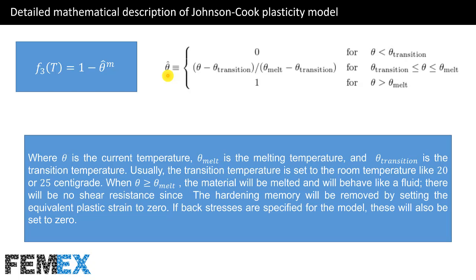Usually the transition temperature is set to room temperature, like 20 or 25 degrees centigrade. When theta is greater than theta-sub-melt, the material will be melted and will behave like a fluid. There will be no shear resistance, since the hardening memory will be removed by setting the equivalent plastic strain to zero.